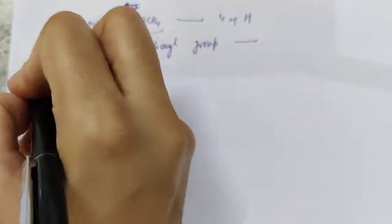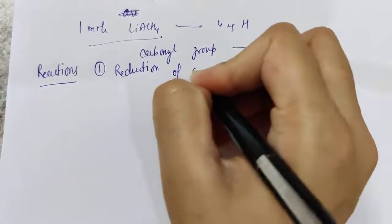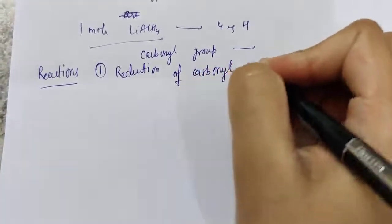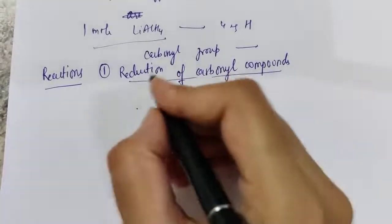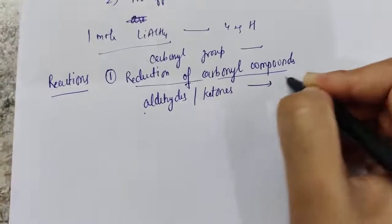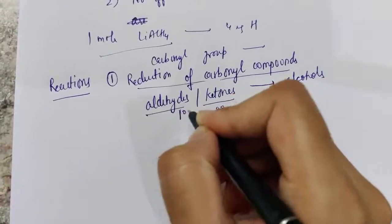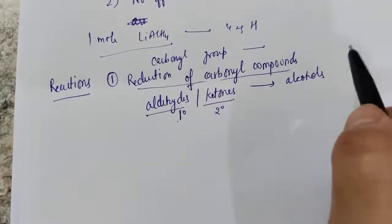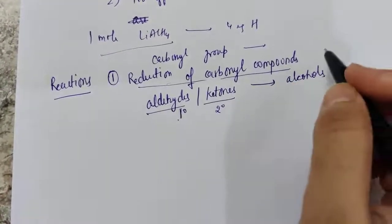The first reaction is the reduction of carbonyl compounds — that is, aldehydes and ketones. Aldehydes and ketones are converted to alcohols: aldehyde gives primary alcohol while ketone gives secondary alcohol. Aldehydes and ketones are not directly reduced to alcohols, but first an aluminium alkoxide is formed.